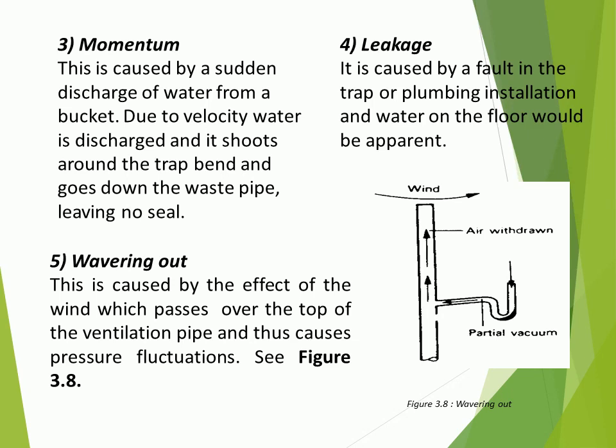Wavering out: this is caused by the effect of wind which passes over the top of the ventilation pipe and thus causes pressure fluctuations. See figure 3.8.